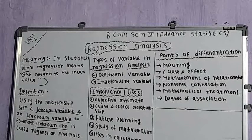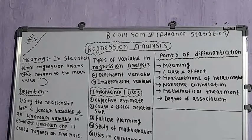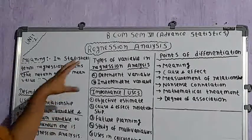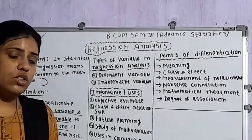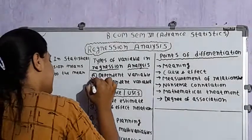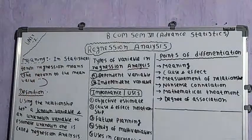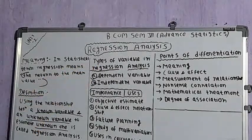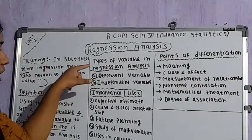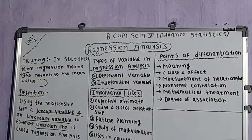In regression analysis there are two types of variables. The first is the dependent variable and the second is the independent variable. The dependent variable is one whose value is influenced by the other variable — its value depends on the independent variable. The independent variable is one which influences the value of the other variable.